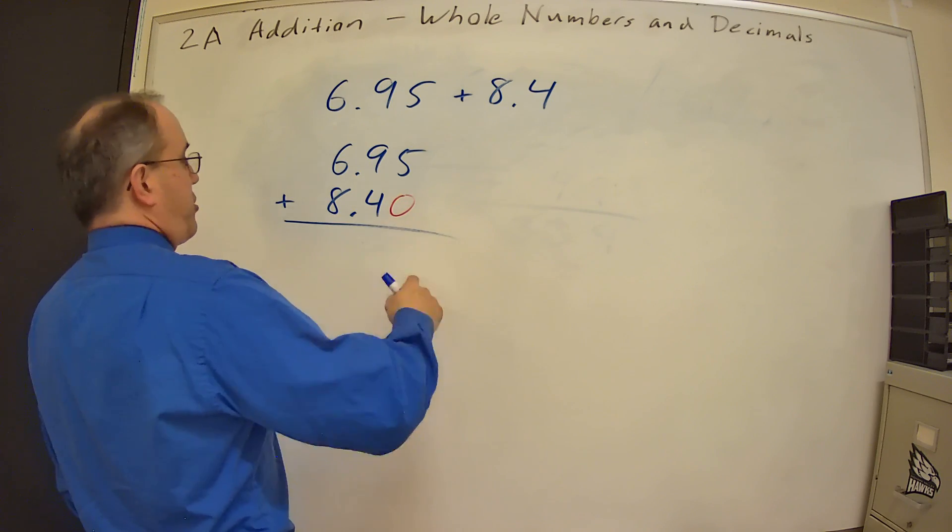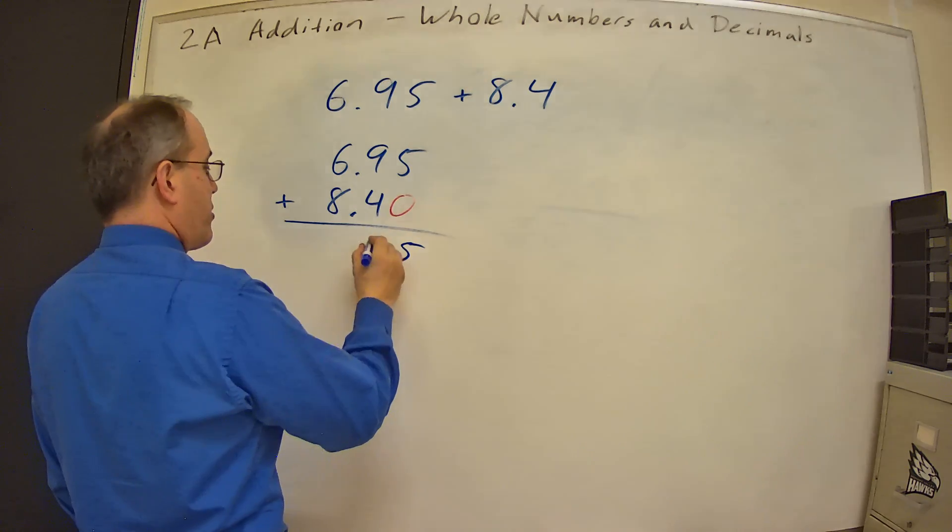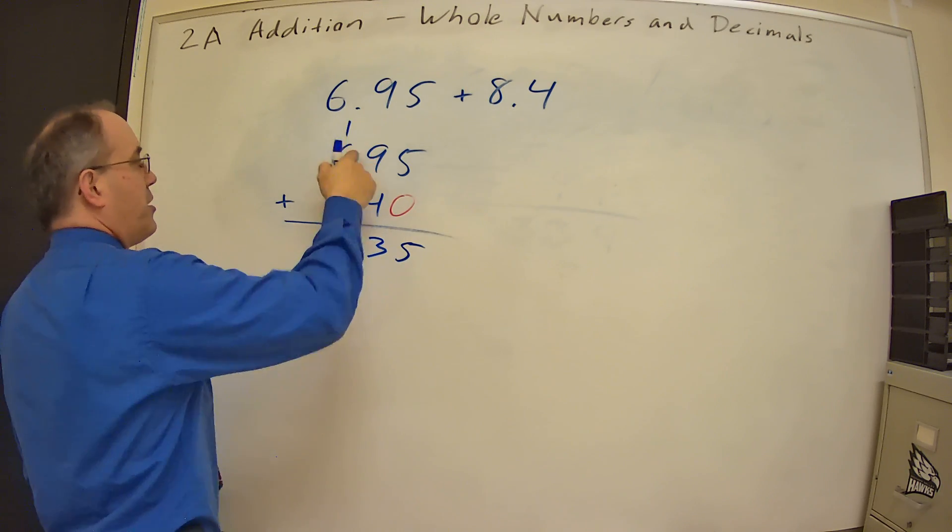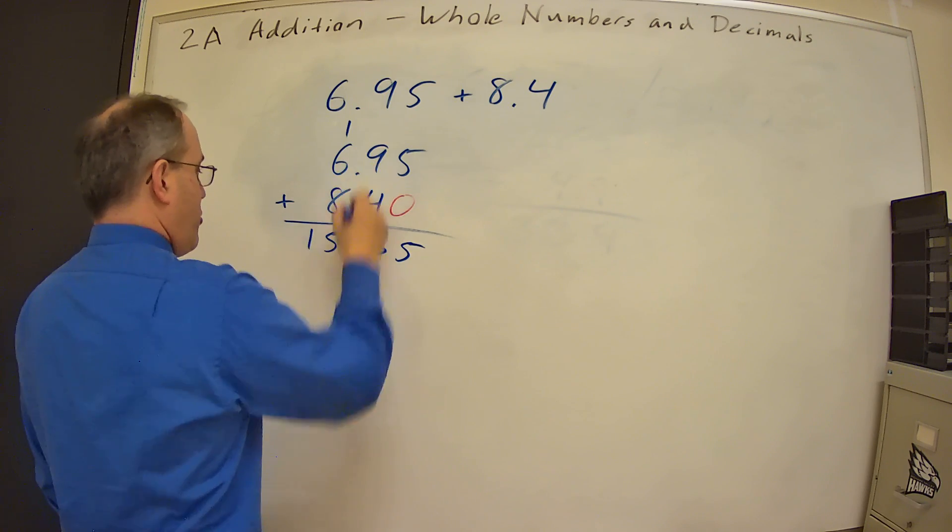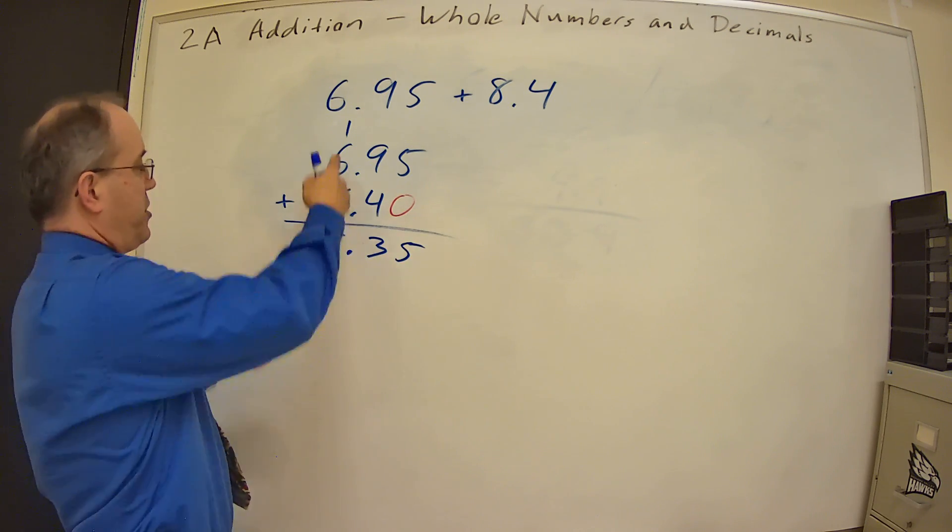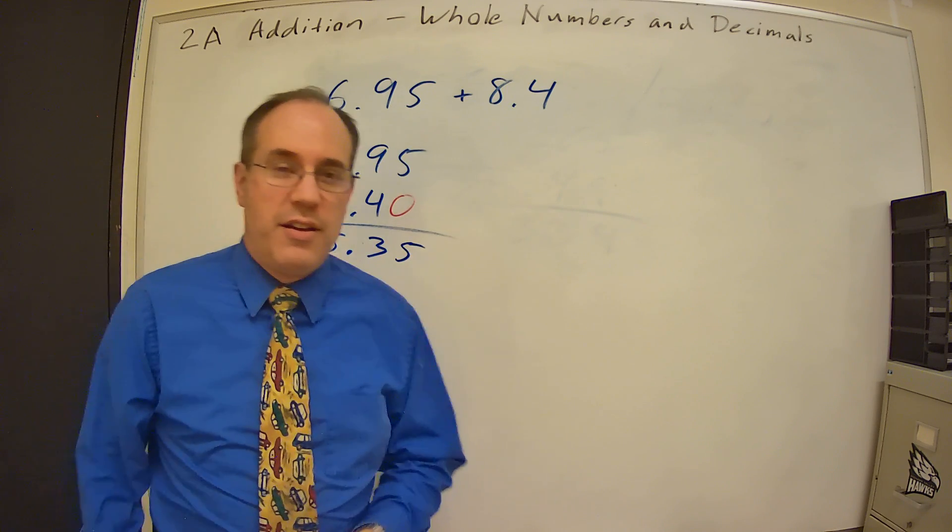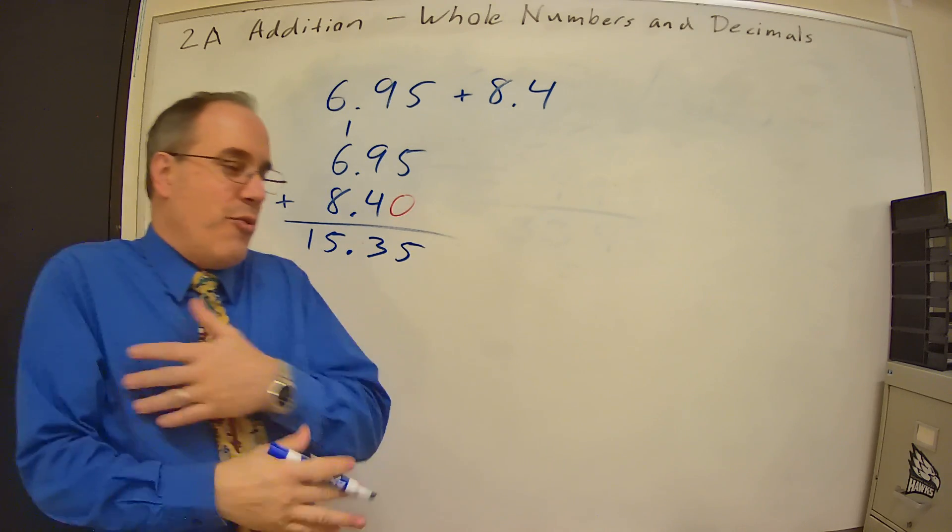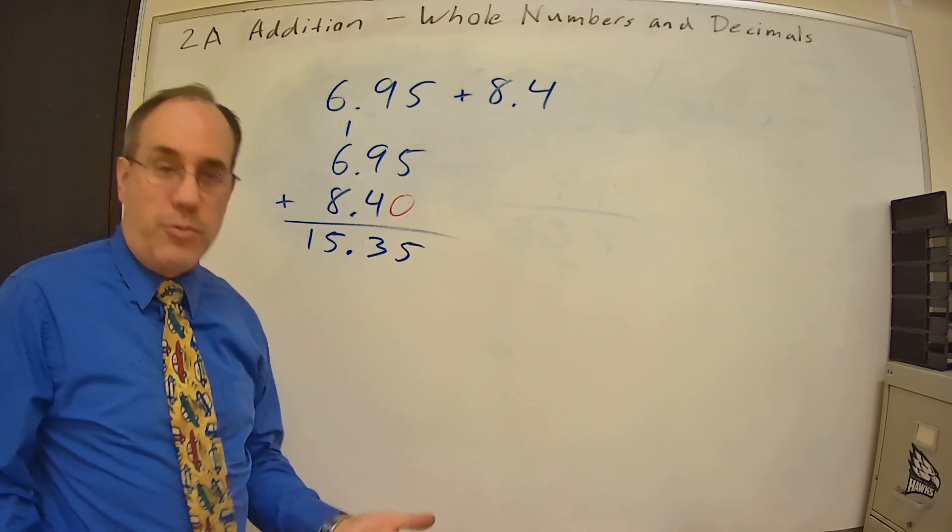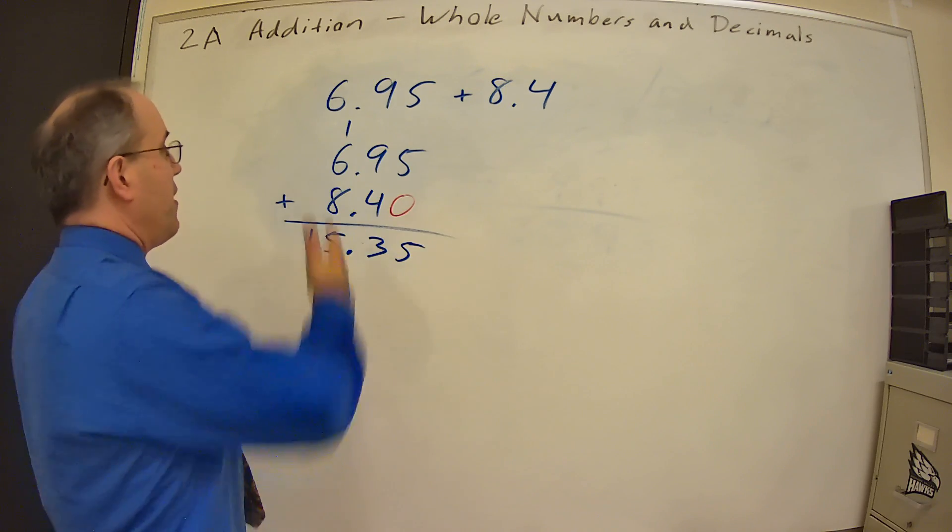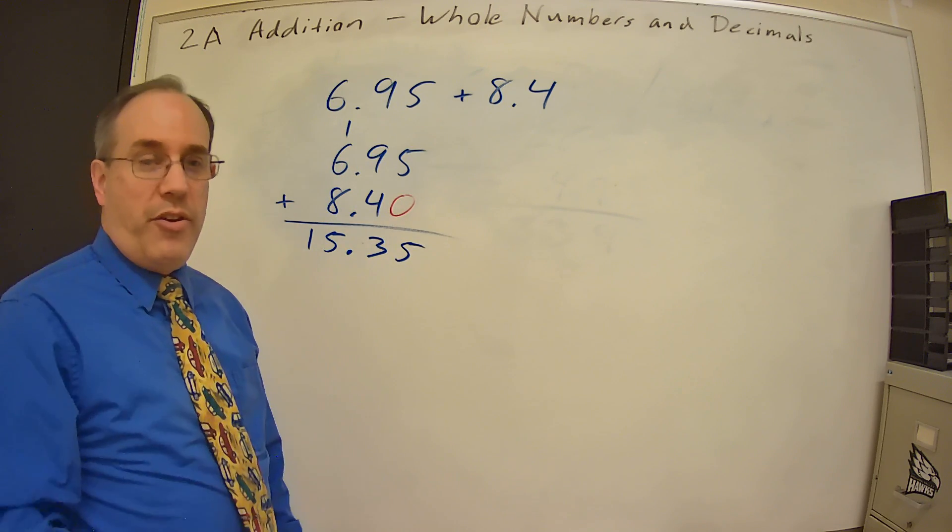So now I can just go 5 plus 0 is 5. 9 plus 4 is 13. Carry the 1. 1 plus 6 is 7. 7 plus 8 is 15. And don't forget to fill in that decimal point because we still have the ones place, the tenths place, the hundredths place. So adding decimals really doesn't change anything except for the fact that now we're going to see a decimal point in there. Line up the place values, add one column at a time, and it'll work.